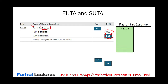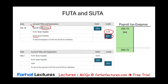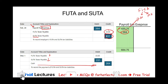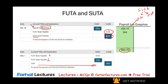We debit an expense called payroll tax expense. The company — your employer — is responsible for this tax. Eventually, the company pays off the tax by debiting the payable and crediting cash. Combined with the FICA employer match of $420.75, the total employer payroll tax for this employee is $684.75.